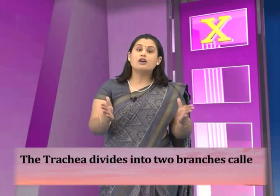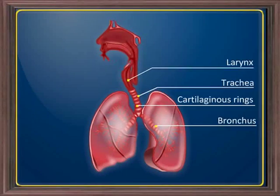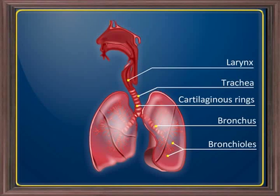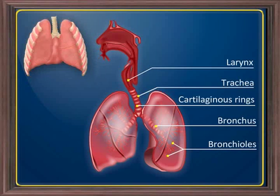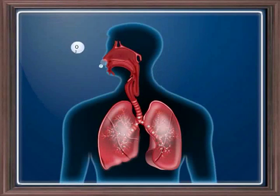The larynx opens into a long tube called the trachea or windpipe. The trachea externally has a number of C-shaped cartilaginous rings that give stability and flexibility, and also prevent the collapse of the windpipe when there is no air in it. The trachea divides in front of the esophagus into two branches called bronchi. These bronchi enter the lungs on their respective sides, divide into a number of branches called bronchioles. There are two lungs in the thoracic cavity, lying in the rib cage which gives them protection. Each lung is enclosed in a double-walled sac called the pleura.